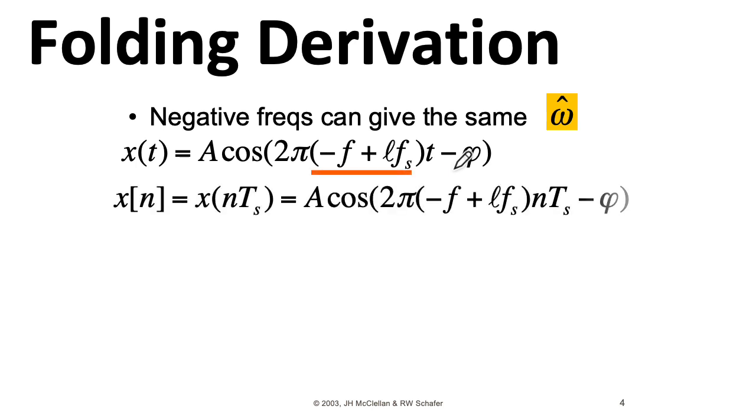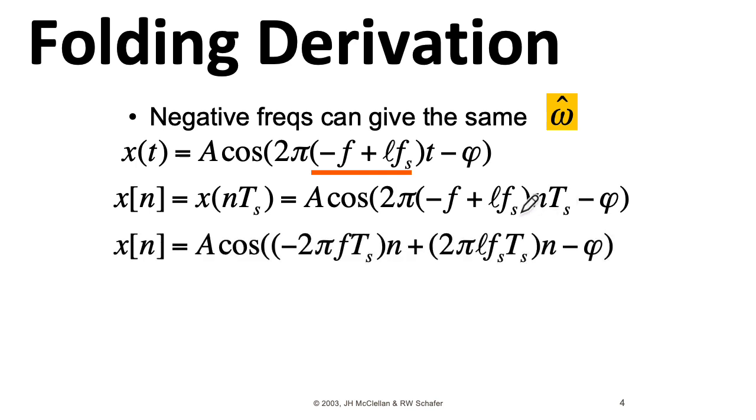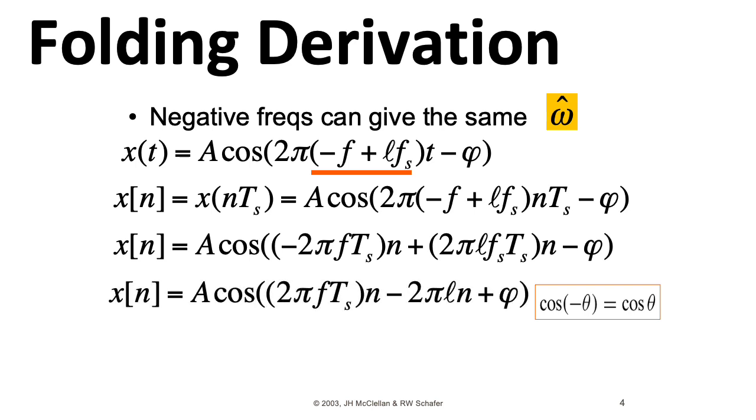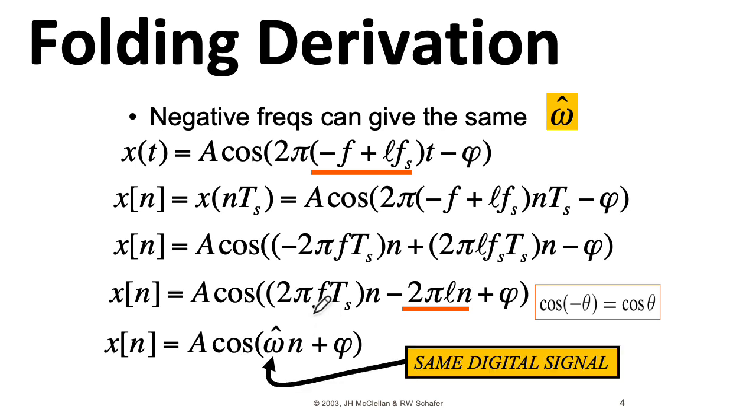We'll replace T with n capital TS, where capital TS is our sample rate. Then we can multiply this through and regroup the terms. The sample rate is 1 over the sample period, so this all goes away. So now we can use this property that cosine minus whatever equals cosine of whatever to flip the sign on everything in the cosine. Here we have our now familiar friend, the integer multiple of 2 pi, which we can get rid of inside the cosine. So we get the same omega hat that we would have gotten if we just put in this frequency f.